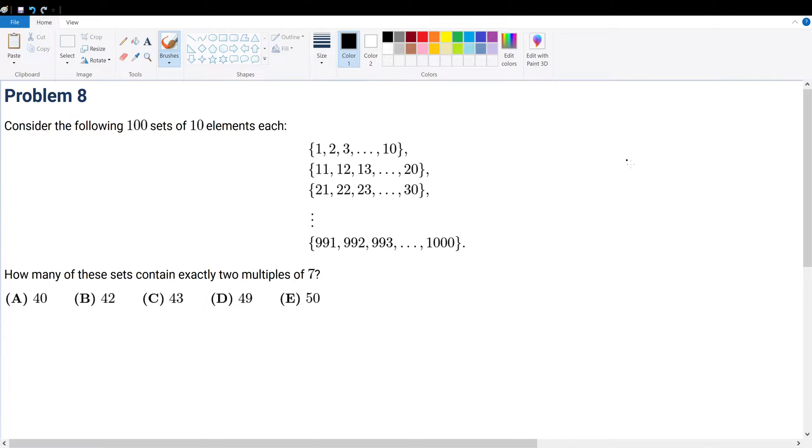So first of all, each of these series you should see should contain a multiple of 7. For example, 7 times 1, 7 times 2, 7 times 3,